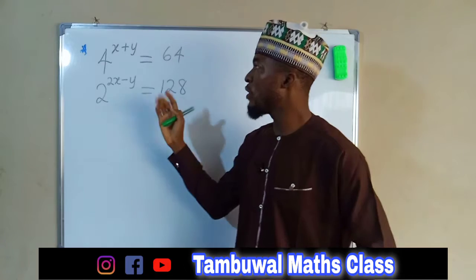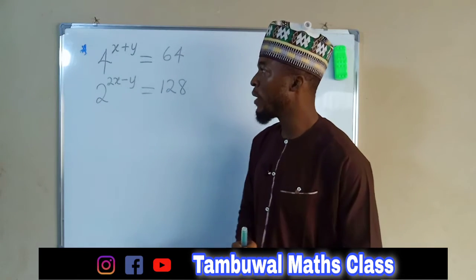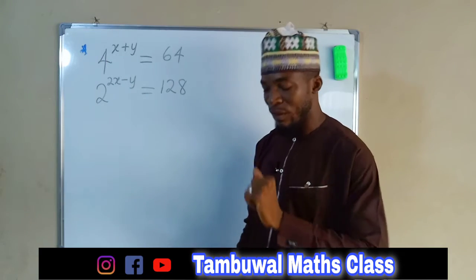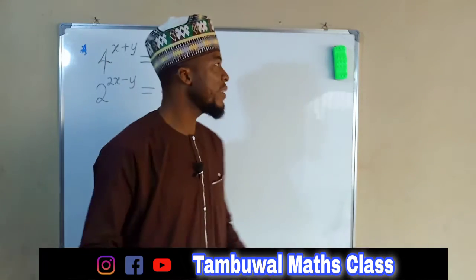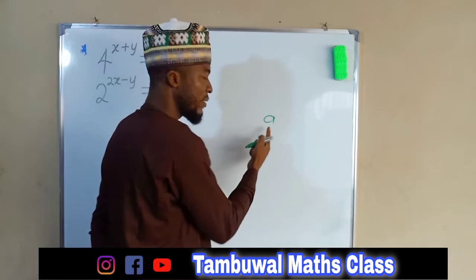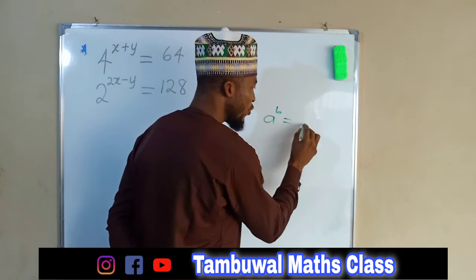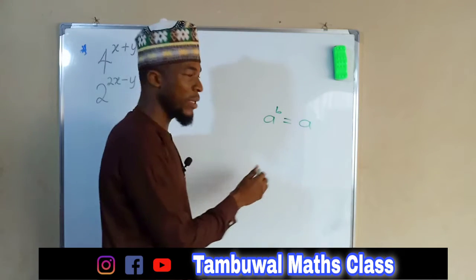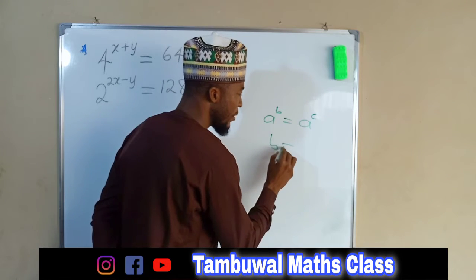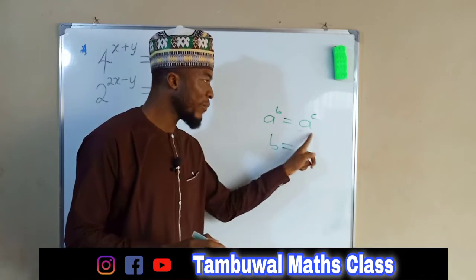Look at the one I have here on the board. These two terms appear to be in an index form, and the left hand side is equal to the right hand side. There is a particular law in indices that says if you have a number A to the power of B, and this is equal to the same number A to the power of C, this implies that B must be equal to C, if they have the same basis.